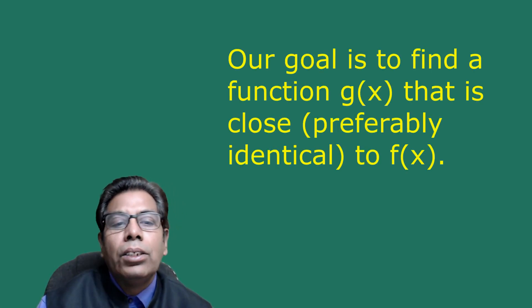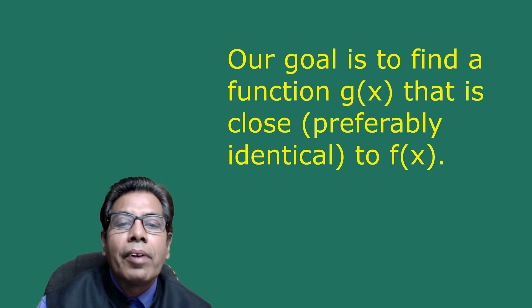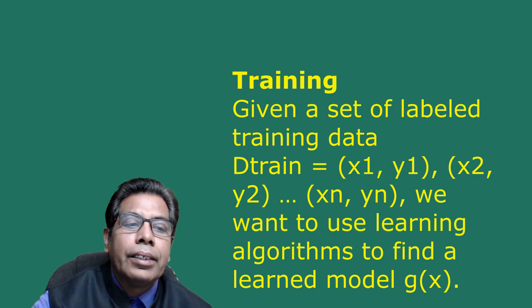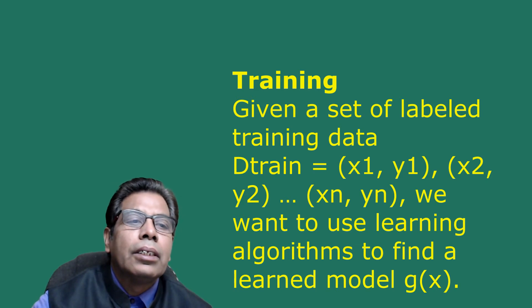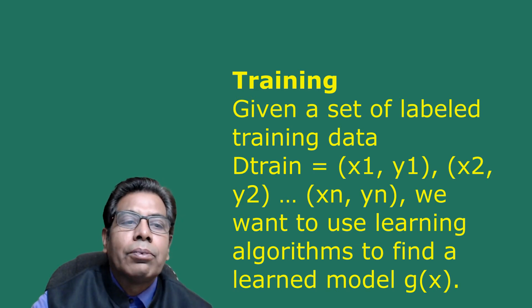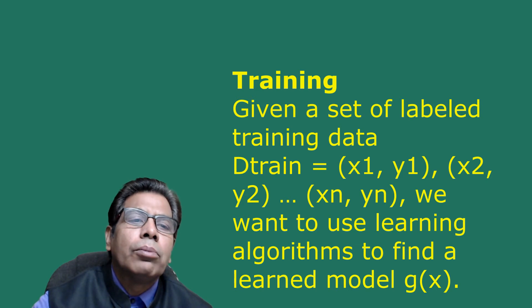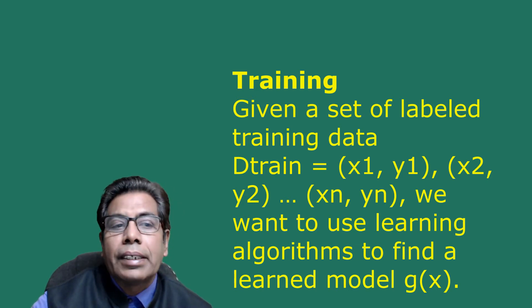Our goal is to find a function g(x) that is close to, or preferably identical to, f(x). Given a set of labeled training data D_train = {(x₁,y₁), (x₂,y₂), ..., (xₙ,yₙ)}, we use learning algorithms to find a learned model g(x). Other learning protocols may include giving examples x without labels y, or giving labeled examples (x, y) one at a time and adjusting the model after each.